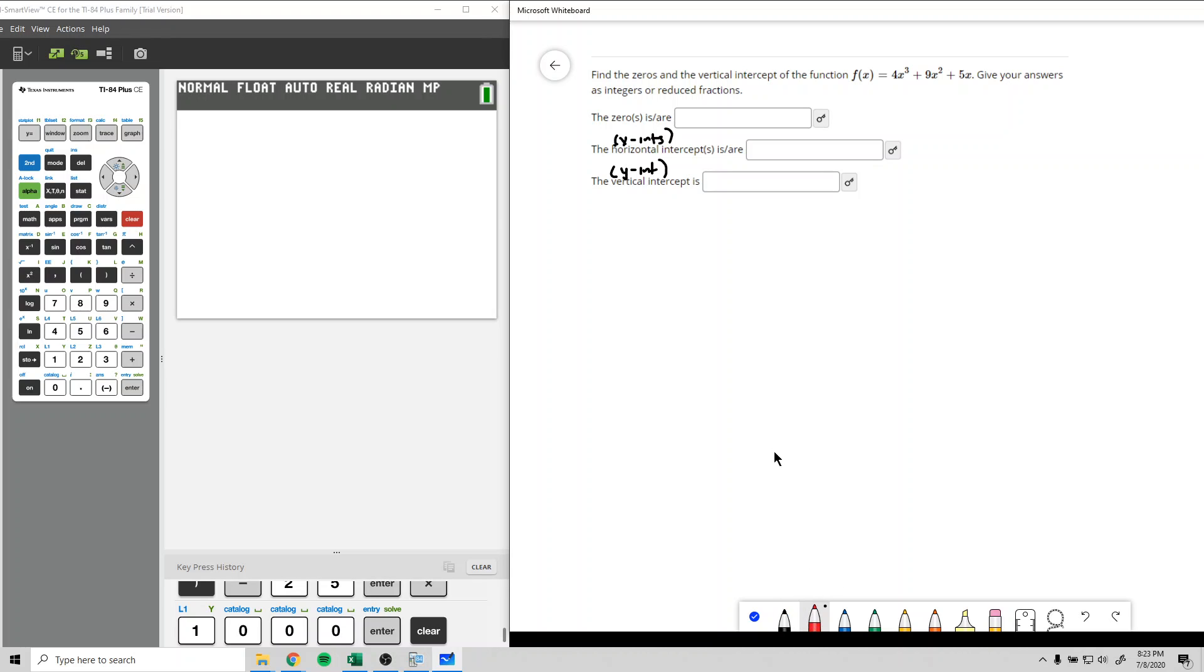Alright, but we'll figure out the zeros first and this is something we learned quite a while ago. We take our function and we replace the f of x with zero. So we've got zero equals 4x cubed plus 9x squared plus 5x. And to solve this, we definitely want to factor.